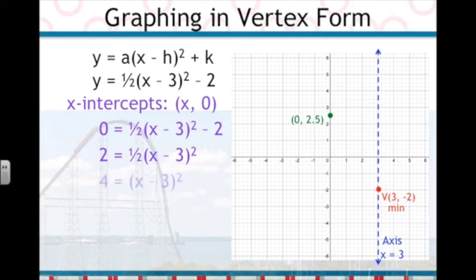So, we'll add 2 to both sides to get 2 equals 1 half times the quantity x minus 3 squared. Then, we'll multiply both sides by 2 to get rid of the 1 half in front of the parentheses. Now that x minus 3 squared is all by itself, we're going to undo the square by square rooting both sides of the equation.